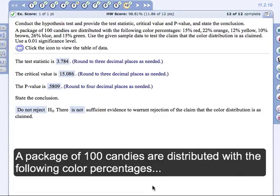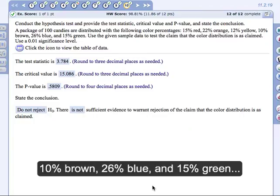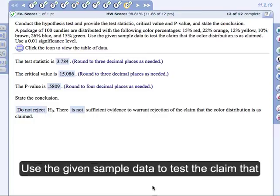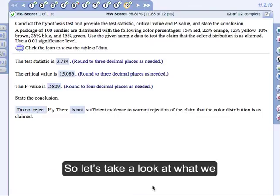A package of 100 candies are distributed with the following color percentages: 15% red, 22% orange, 12% yellow, 10% brown, 26% blue, and 15% green. Use the given sample data to test the claim that the color distribution is as claimed. Use a 0.01 significance level.